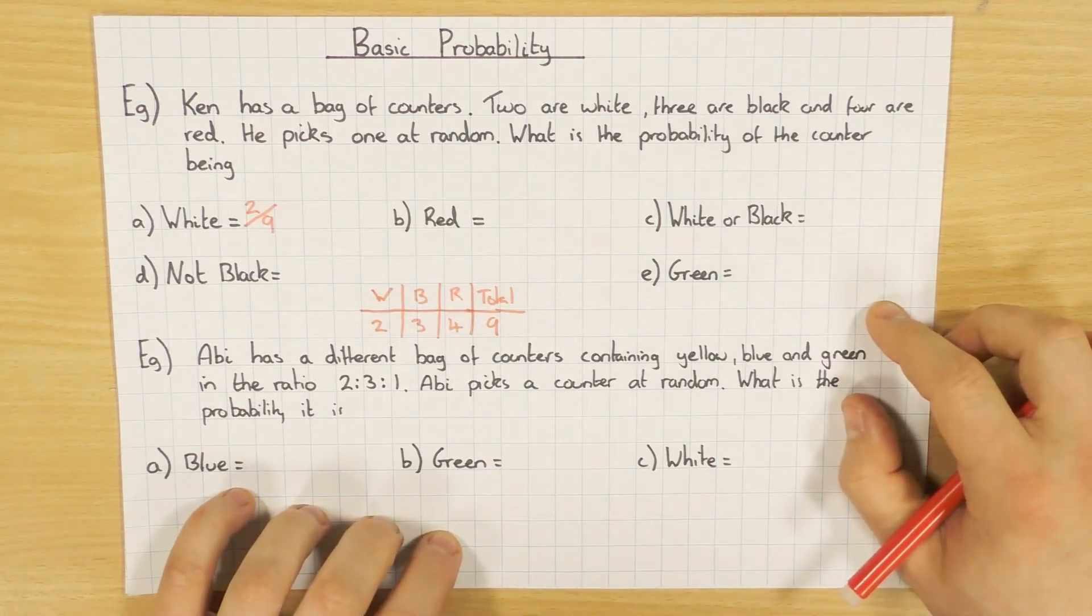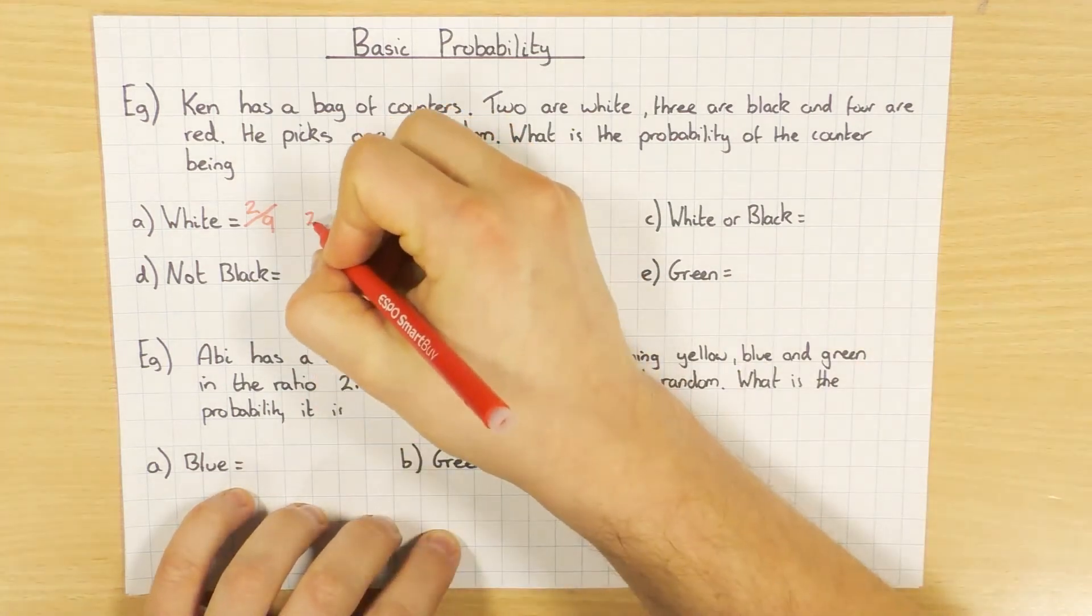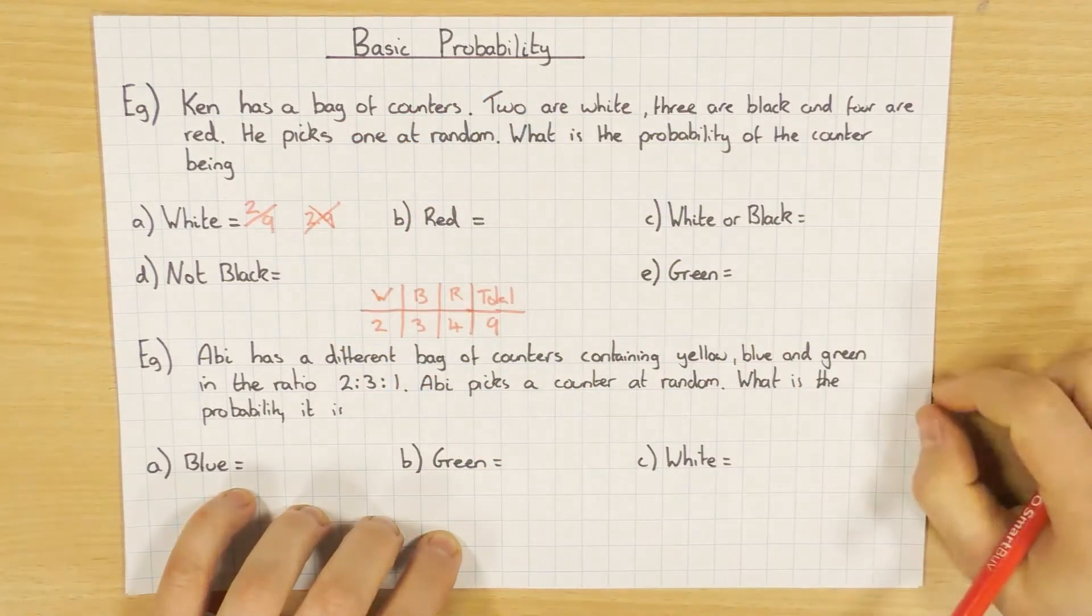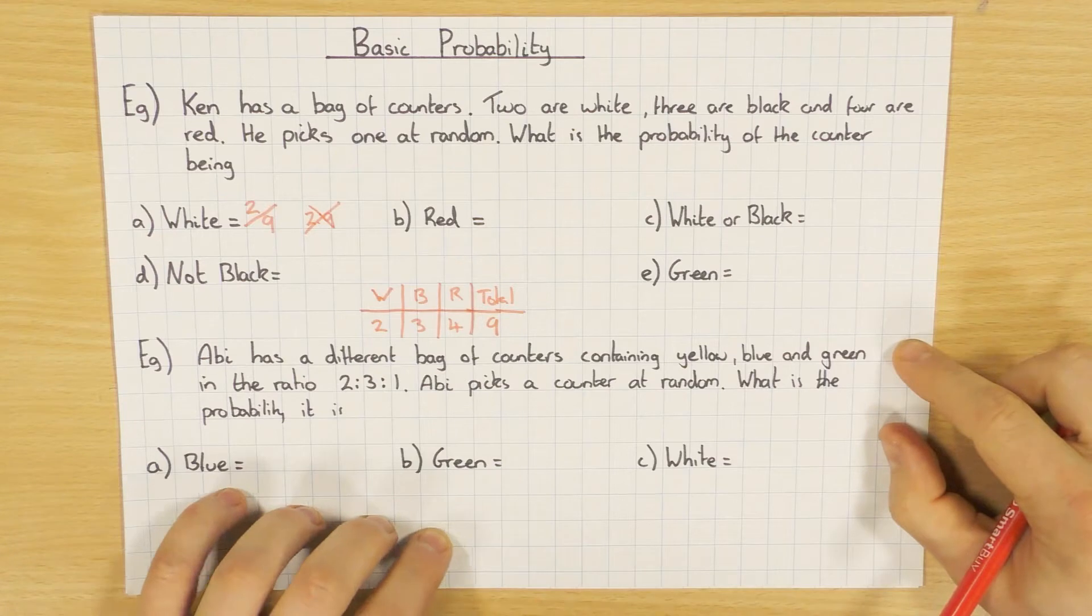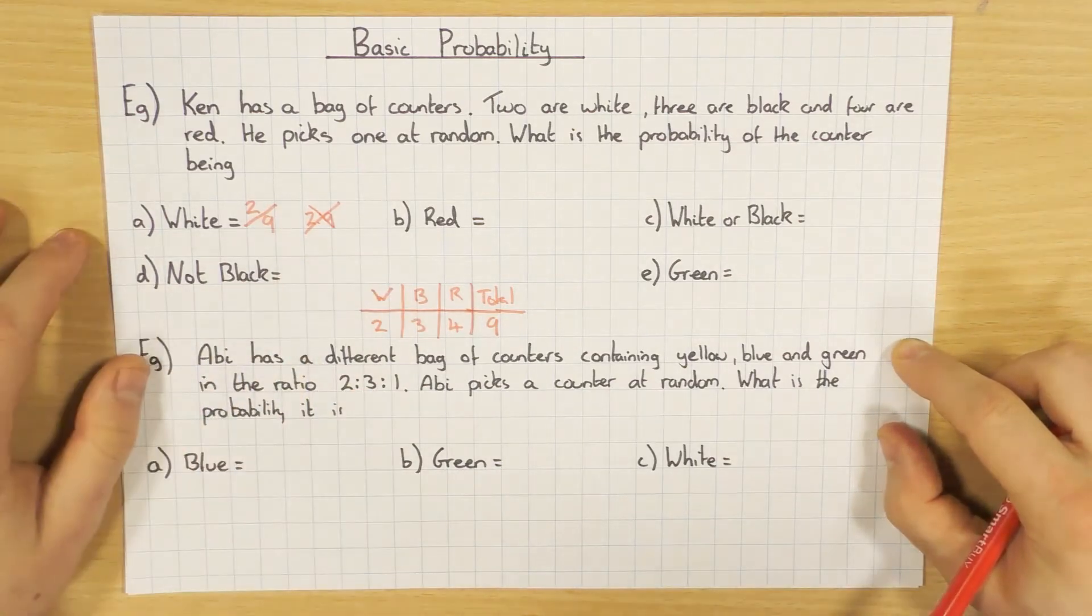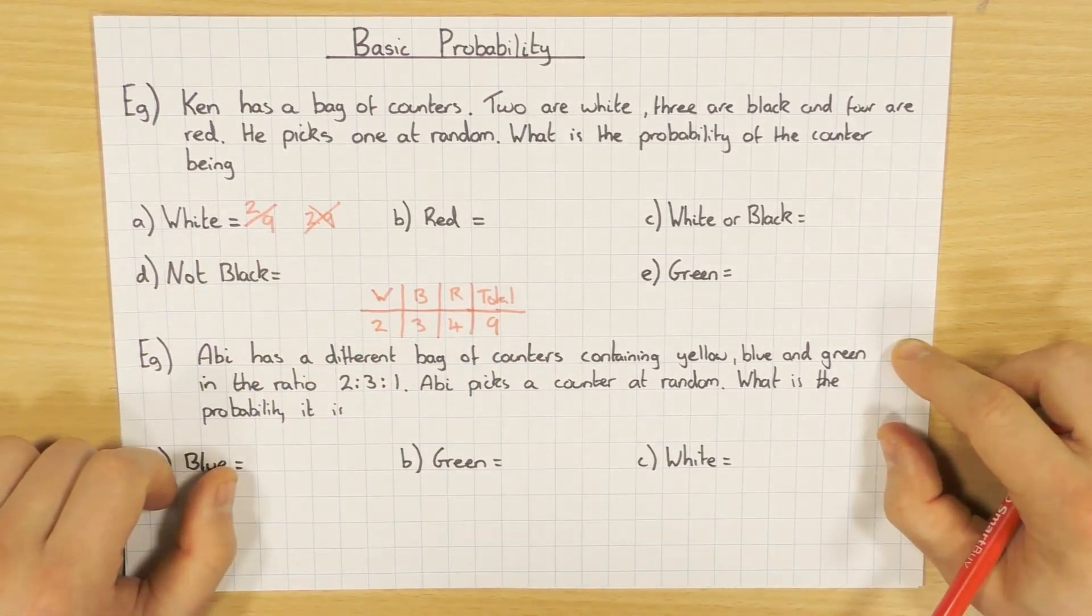Key thing with this, do not put it as a ratio. That is not a probability. You will lose all of your marks if you write it as a ratio. You can write it as a fraction, decimal, or a percentage, but definitely not a ratio. But to be honest, with these types of questions, the easiest form is definitely a fraction.